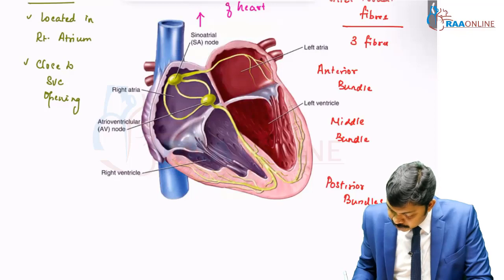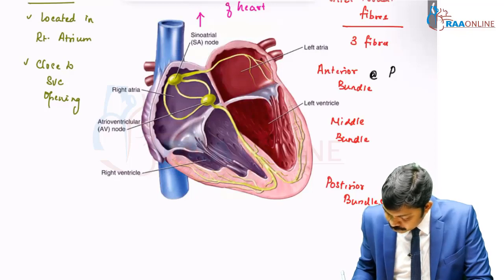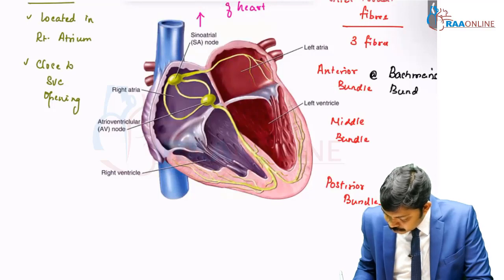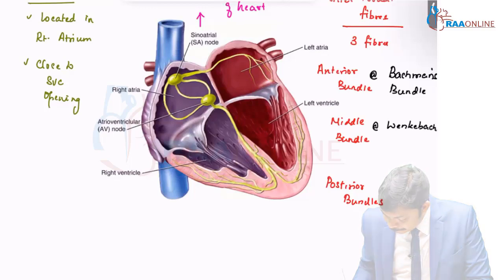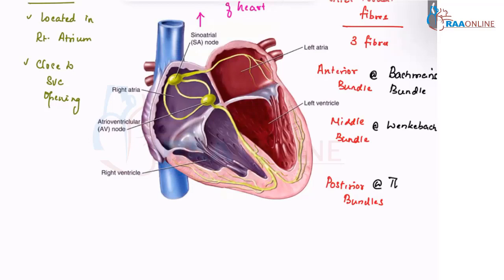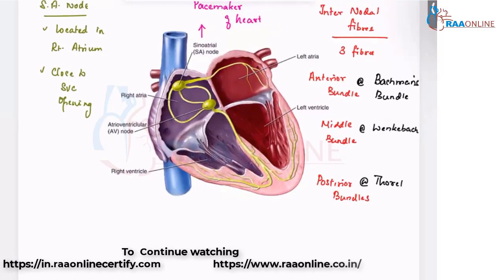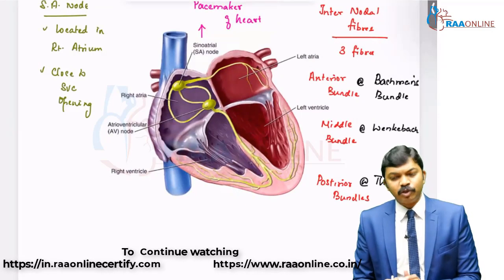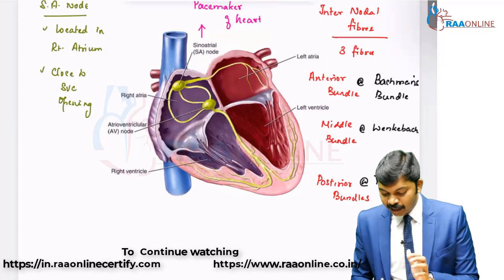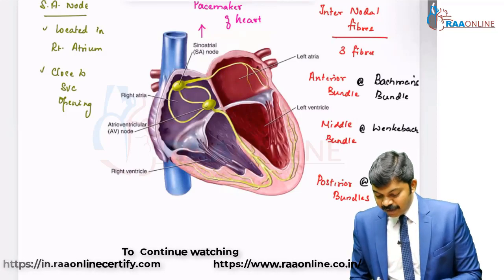The anterior bundle is also called Bachmann's bundle. The middle bundle is also called Wenckebach's bundle. And the posterior bundle is also called Thorel's bundle. These are synonymous terms for the three internodal fibers. That is the way current reaches the AV node.